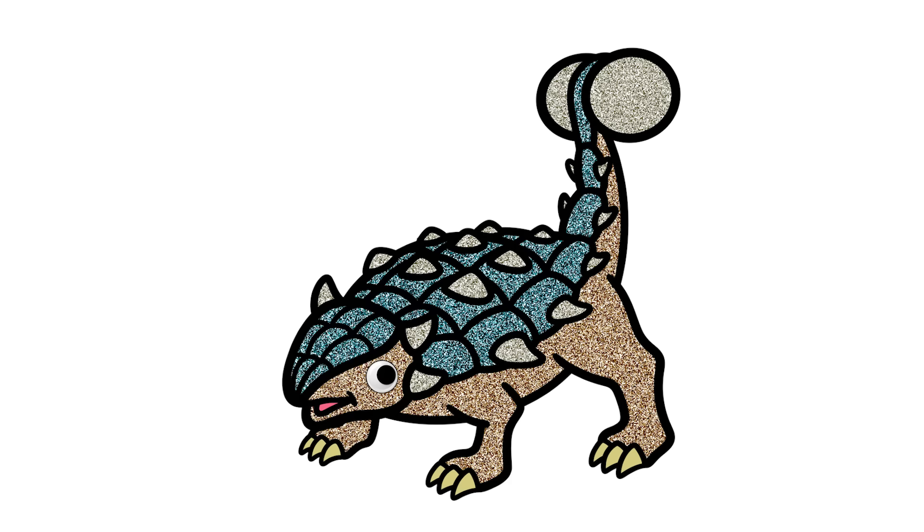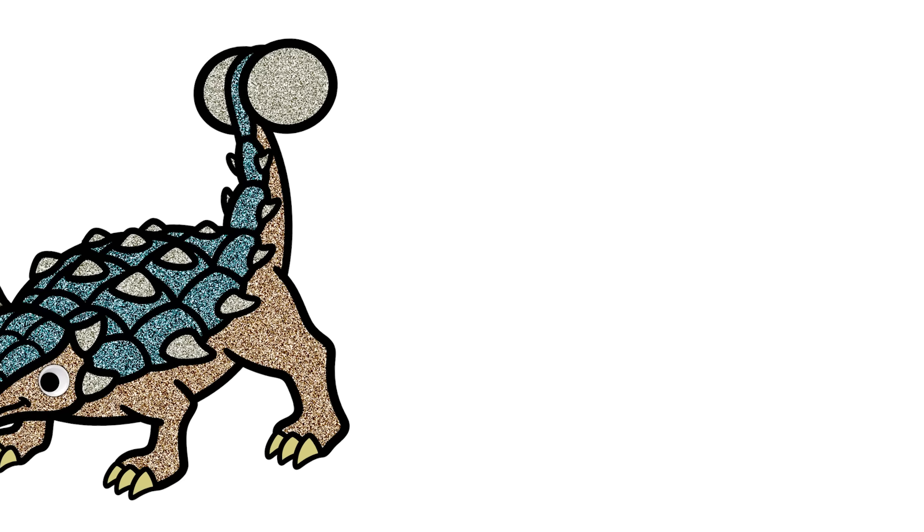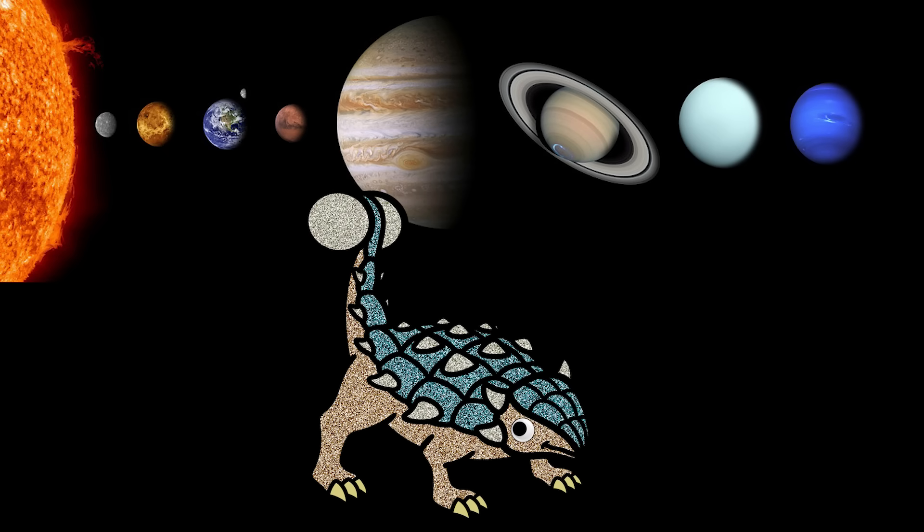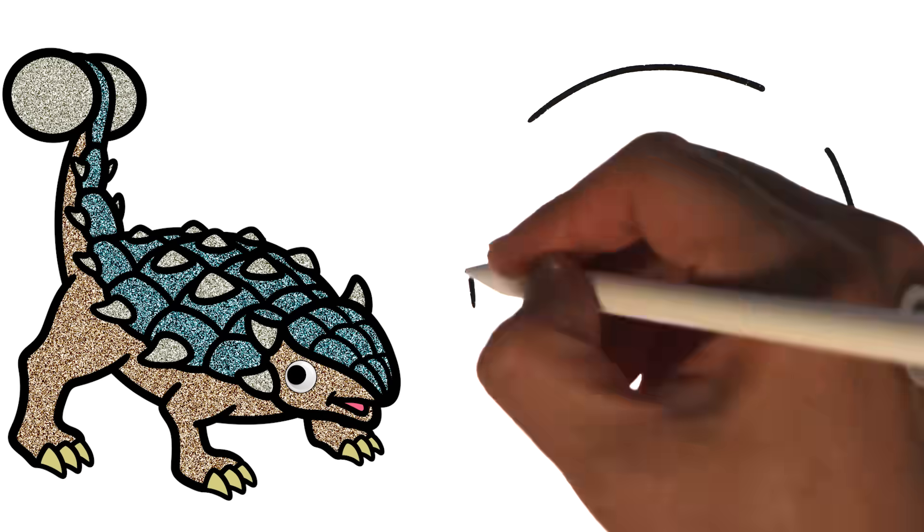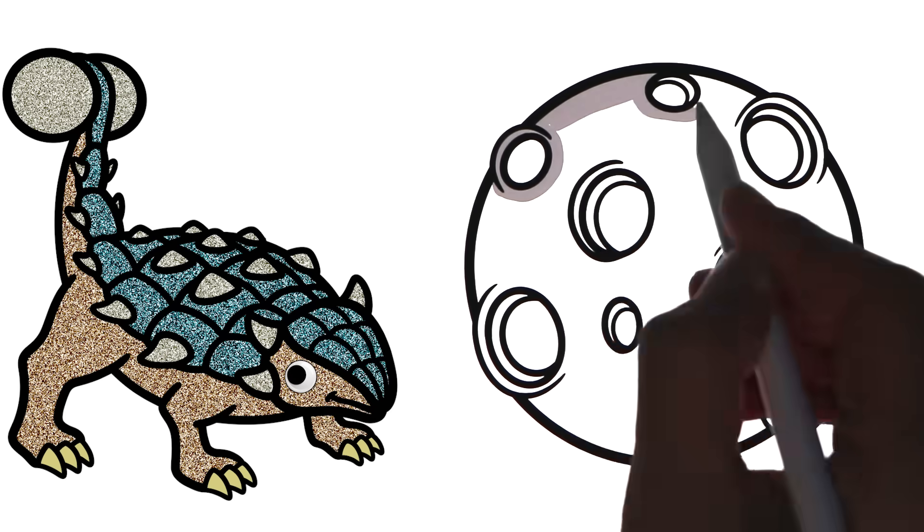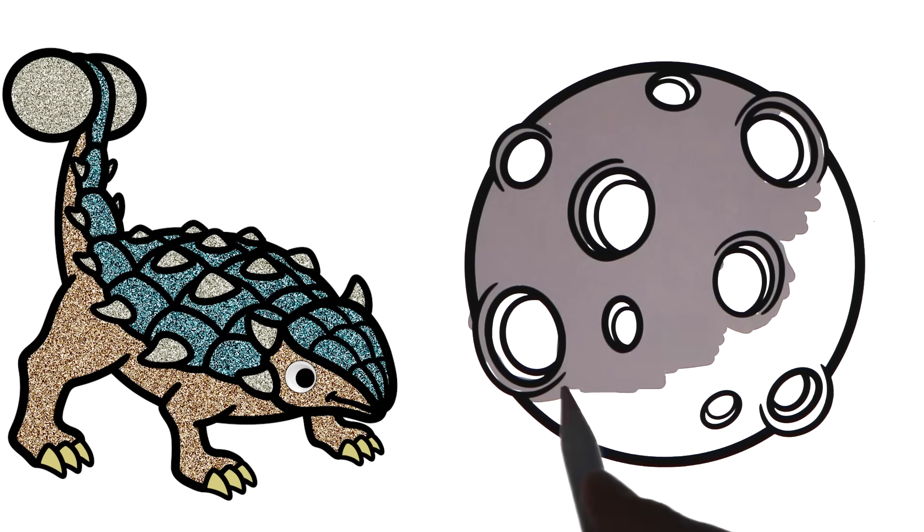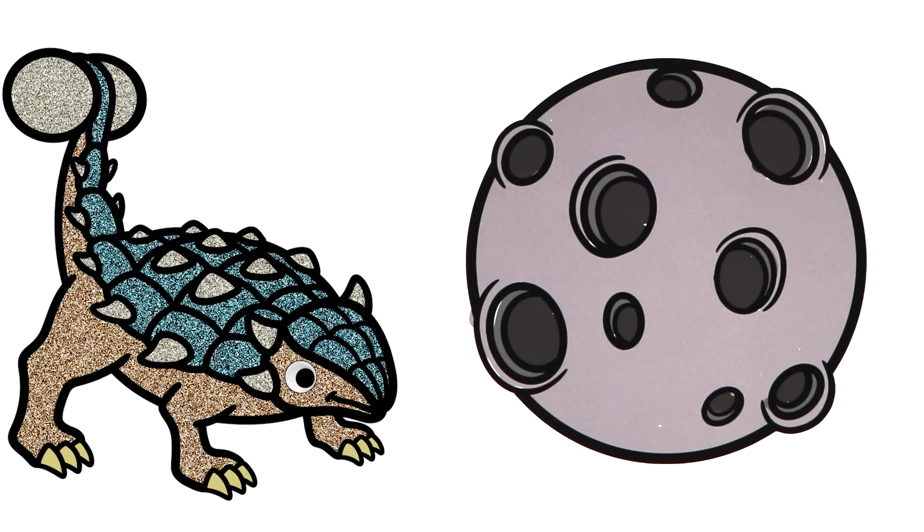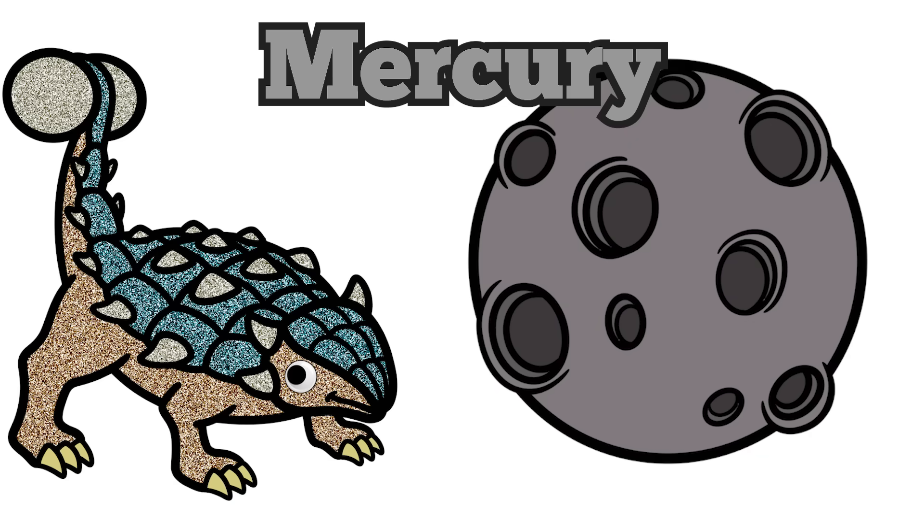Hello, my name is Ankylosaurus. Hello, Ankylosaurus. What's it like on Mercury? Mercury is the closest planet to the sun. So Mercury is the first planet and also the smallest planet in the solar system. And it's a rocky planet covered with craters like my back. Thank you, Ankylosaurus. Bye. Bye, everyone.